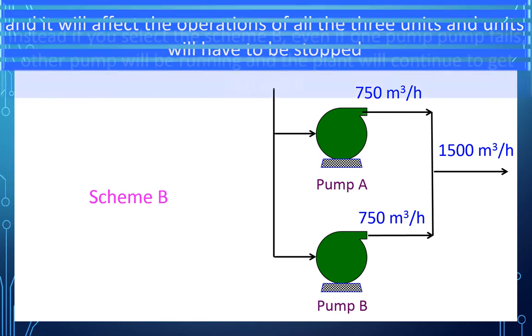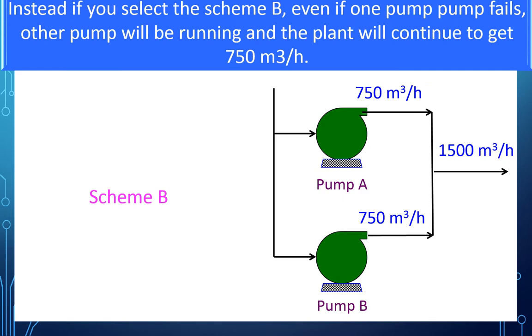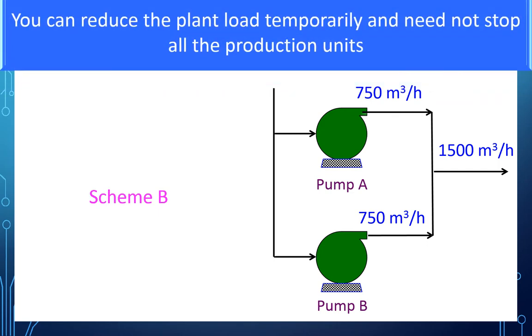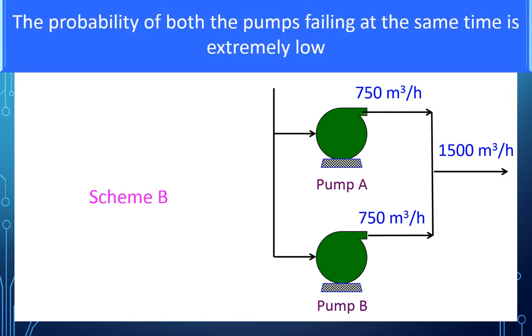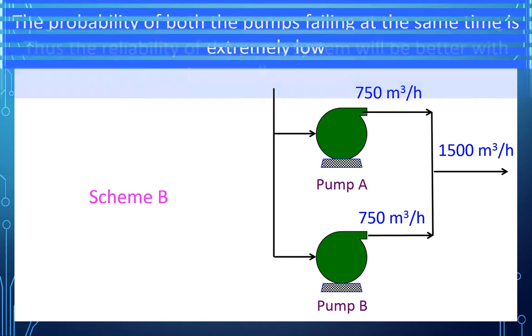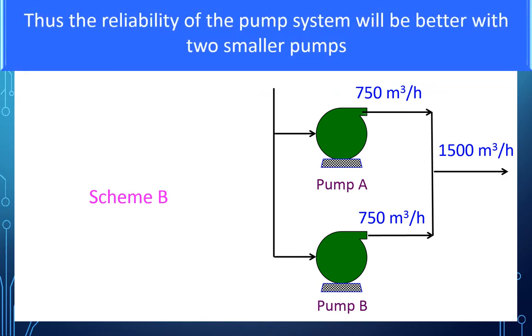And the units will have to be stopped. Instead, if you select scheme B, even if one pump fails, the other one will be running and the plant will continue to get 750 cubic meter per hour. You can reduce the plant load temporarily and need not stop all the production units. The probability of both the pumps failing at the same time is extremely low. Thus, the reliability of the pump system will be better with the two smaller pumps.